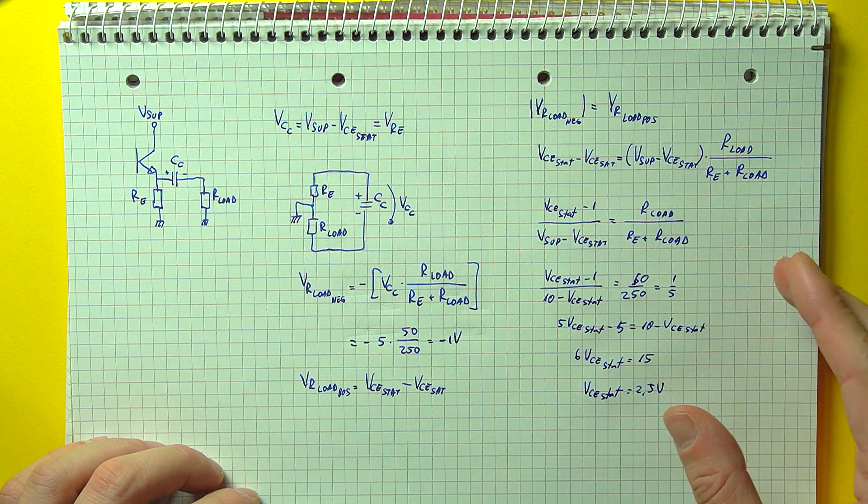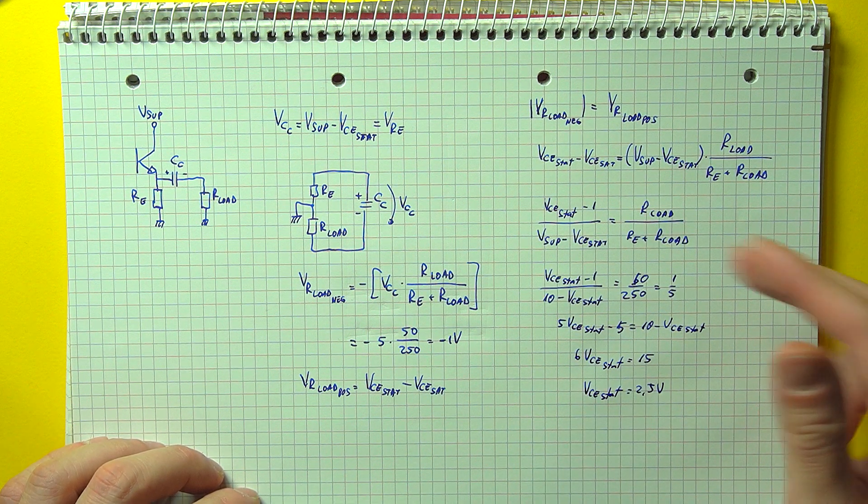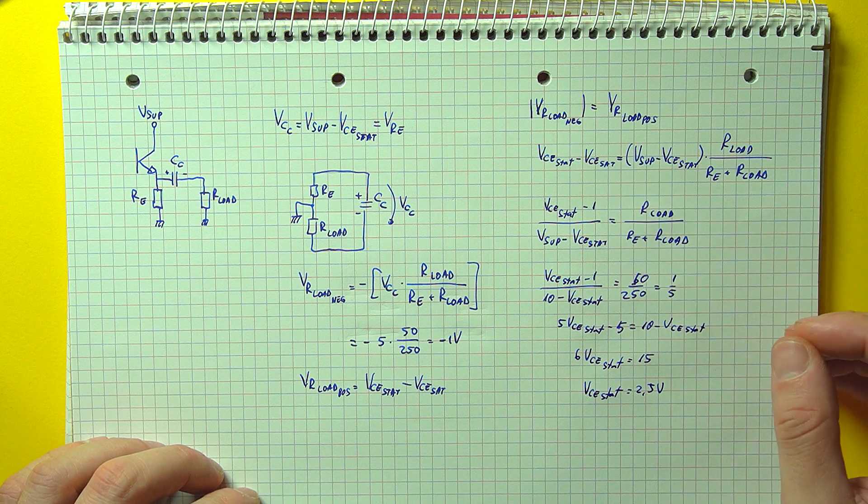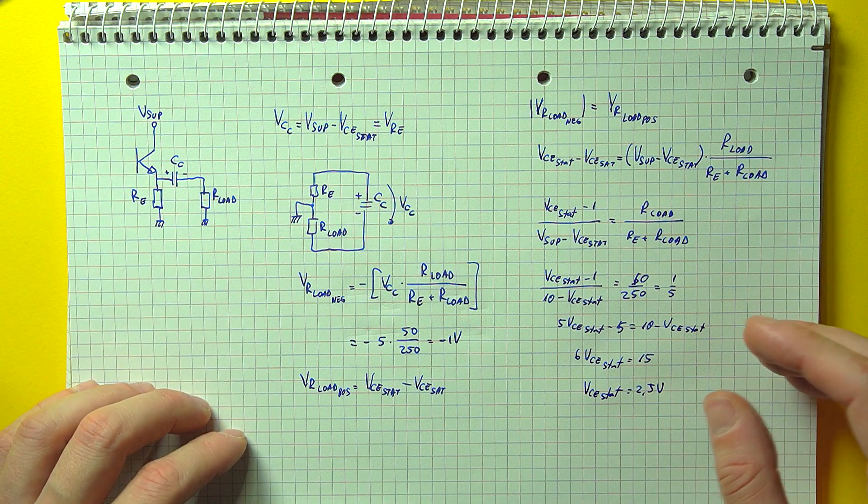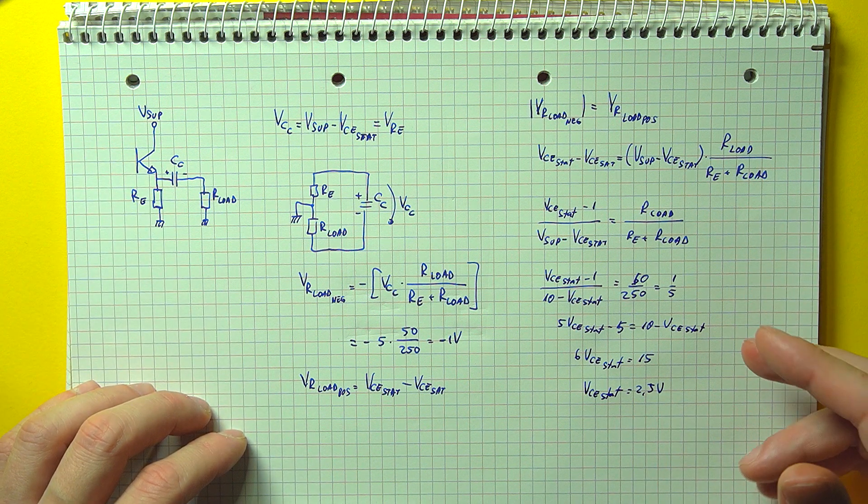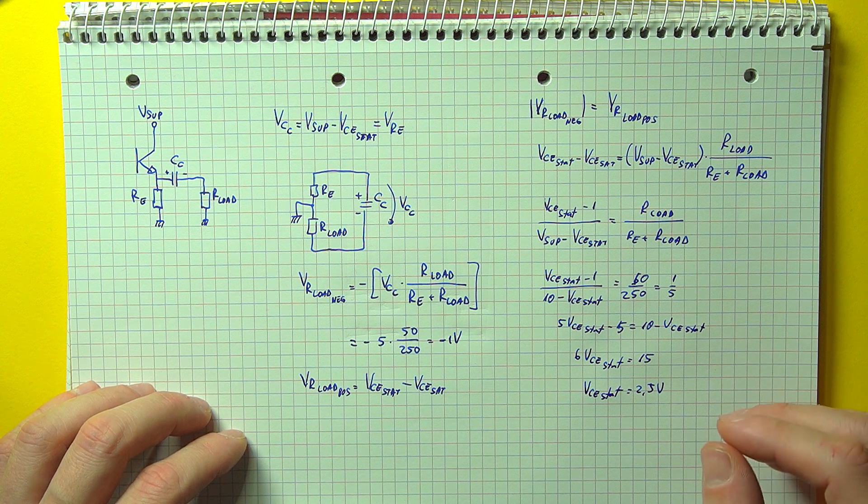So if we leave the supply voltage and resistor the same, and we consider a 1 volt saturation voltage just to stay well within the linear region of the transistor, if we do this, we get our static collector emitter bias point at 2.5 volts.